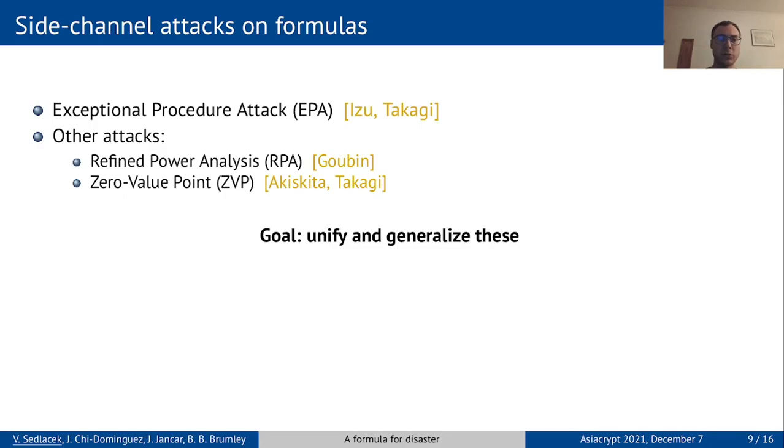So what do these attacks have in common? Well, they all make use of a scalar multiplication side channel oracle, which is constructed from the implementation. The idea here is that you are free to input any point you want to the implementation, and while it is multiplied by the secret key, you observe a side channel of some type.